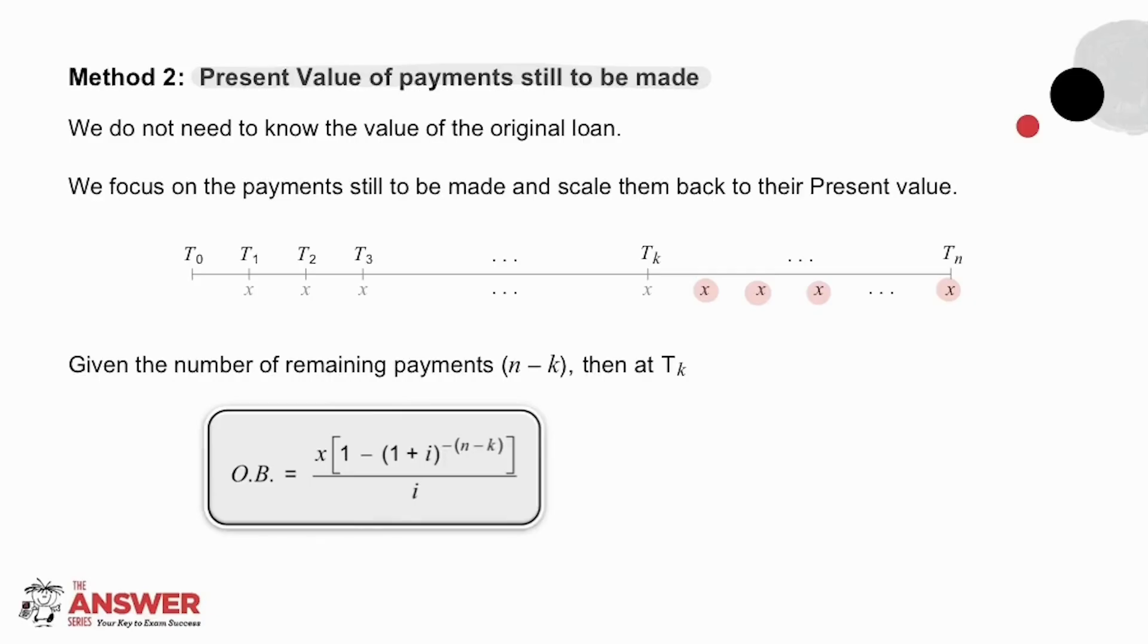And so what we are going to do is say, if we are focusing on time Tₖ, we want to scale all these payments that are still owing back to time Tₖ. The number of payments remaining is the difference between n and k, and so we simply use the present value annuity formula, where the present is at Tₖ.